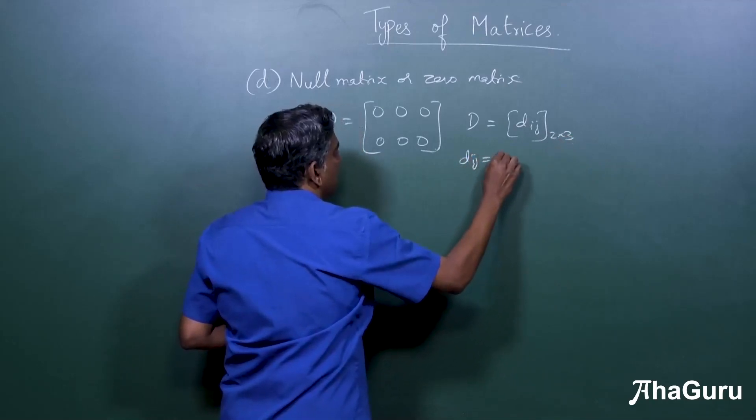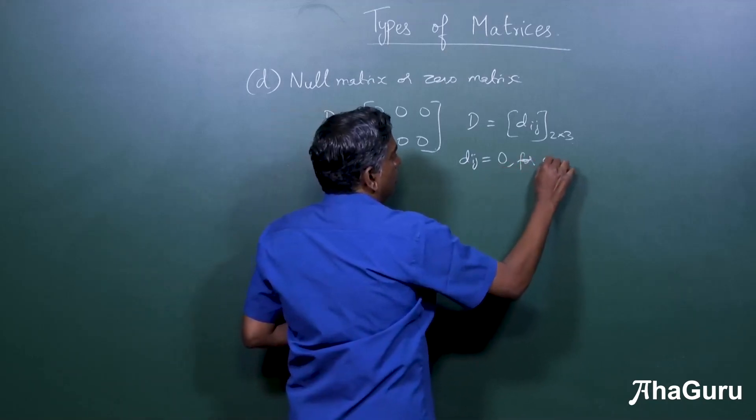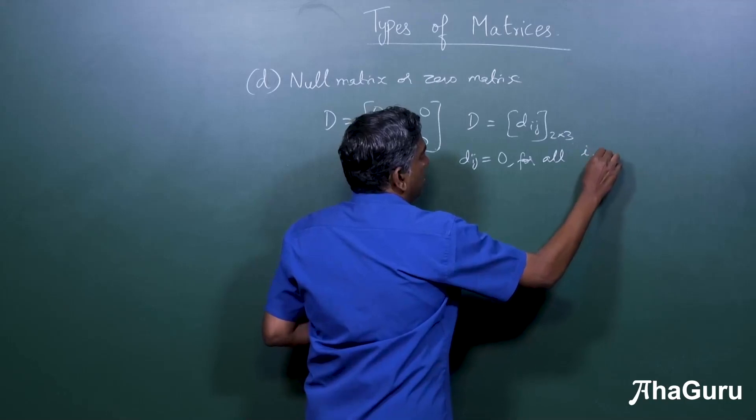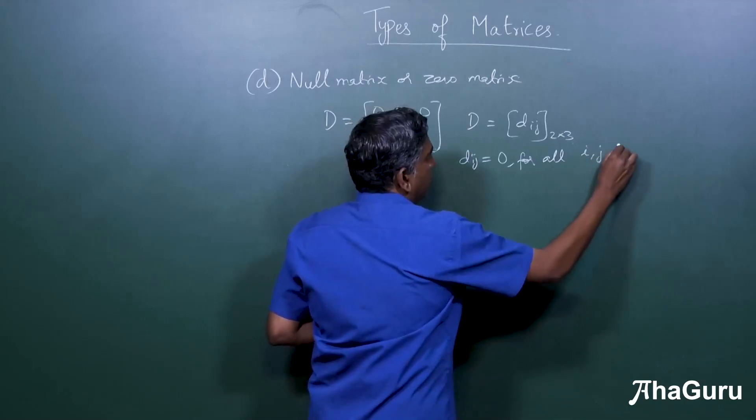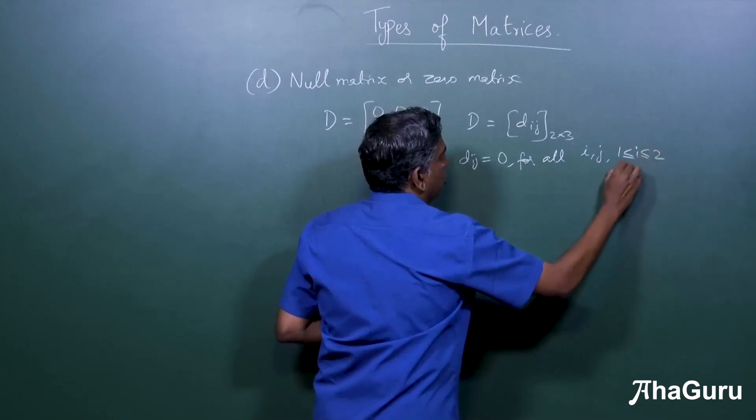So D is Dij, two by three, where Dij is equal to zero for all i comma j.